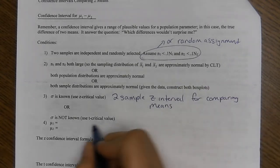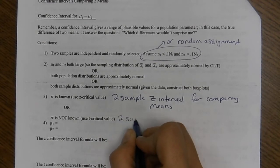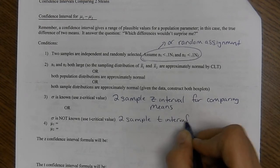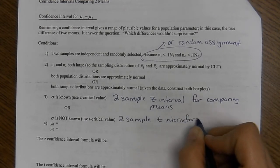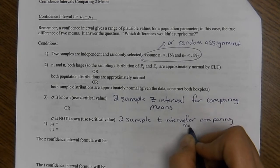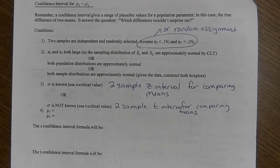If we do not know the population standard deviation, we're going to do a two sample T interval for comparing means. And then go ahead and define mu one, mu two, like we did yesterday.